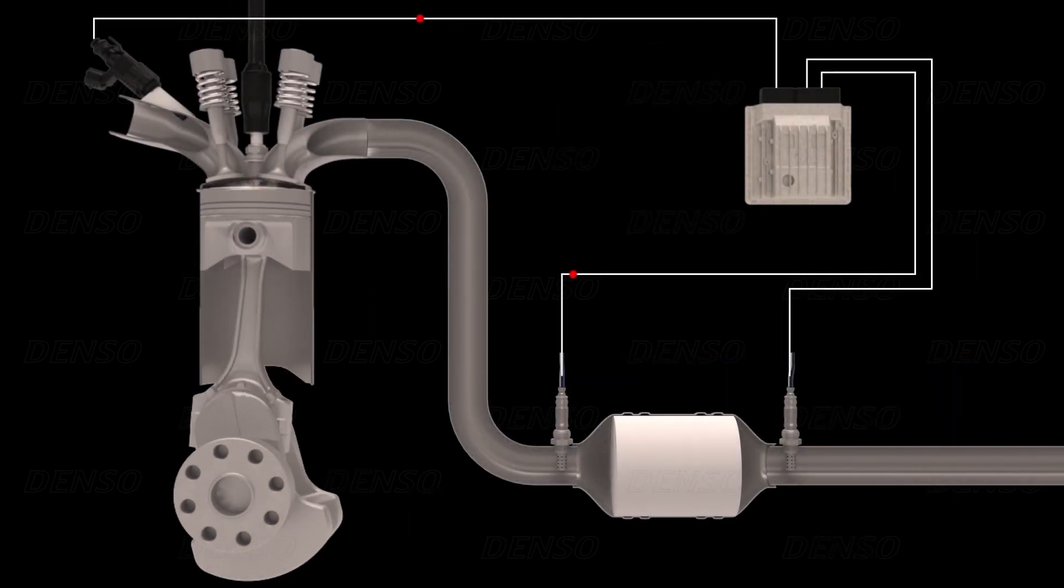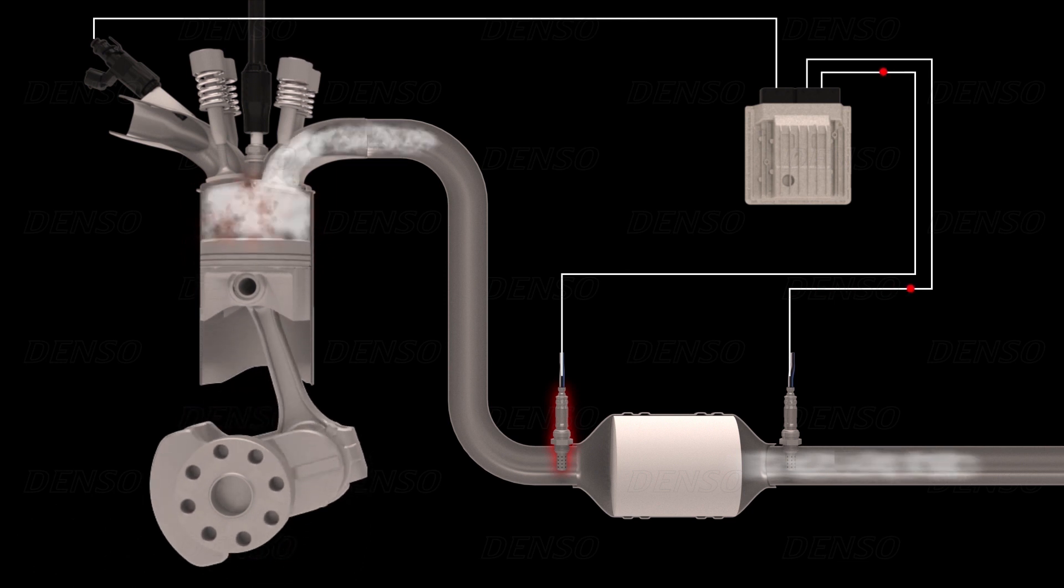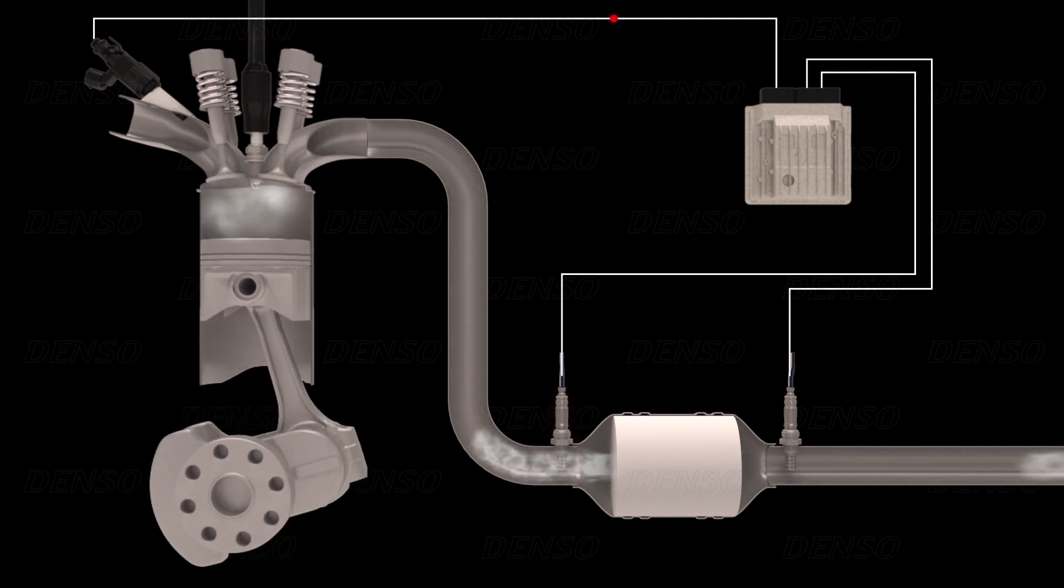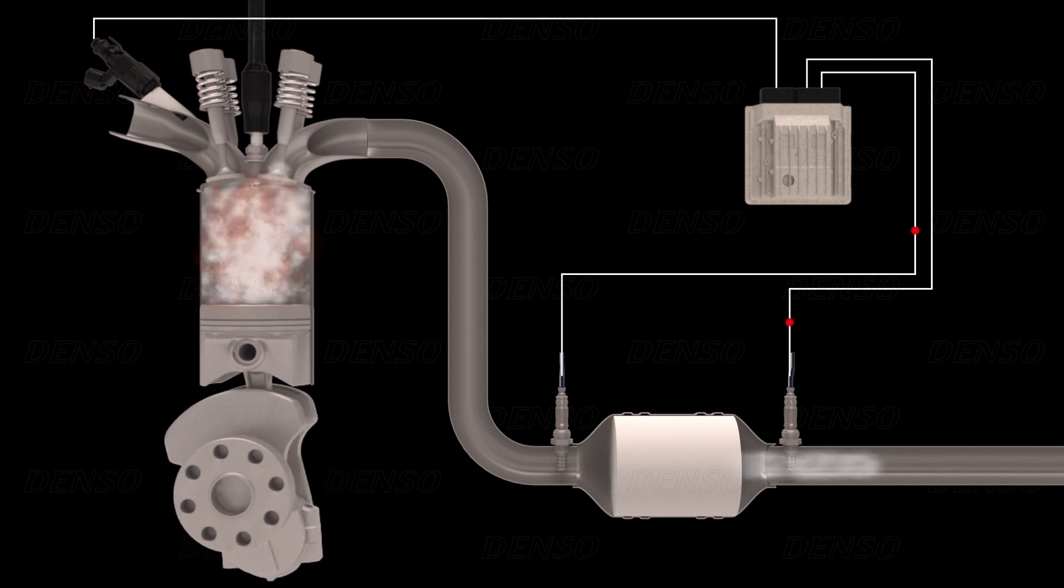The primary or regulating oxygen sensor is located upstream of the catalytic converter, which allows the oxygen content passing into the converter to be measured and then controlled.